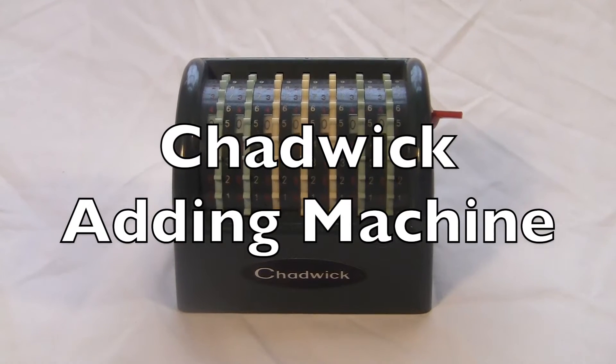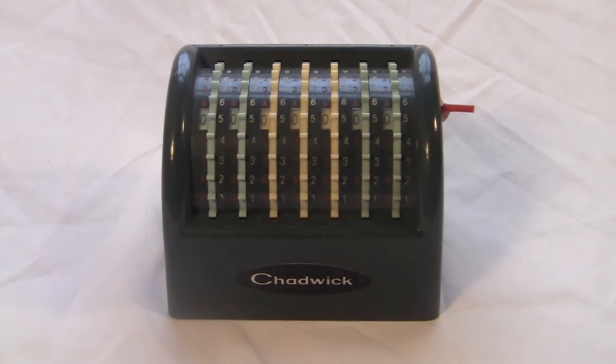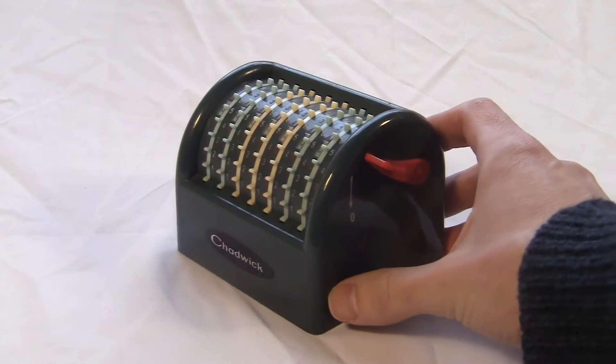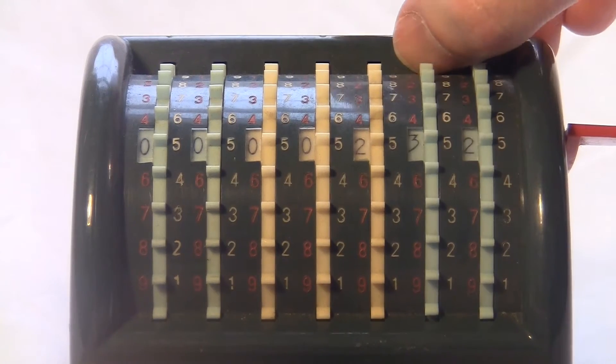This is the Chadwick Adding Machine made in Japan in the 1970s. It's made of plastic. It's got seven parallel spinning wheels that you push with your fingers.